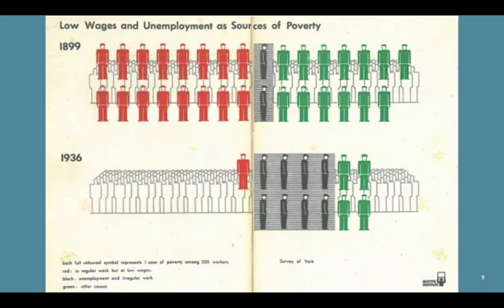Another social issue that can be depicted is wages and unemployment. Here, low wages and unemployment are shown as sources of poverty. Each individual figure — whether red, black, or green — depicts various elements like wages and unemployment, comparing the years 1899 to 1936. In the legend at the bottom, red is regular work, black is unemployed, and green is other causes of unemployment.